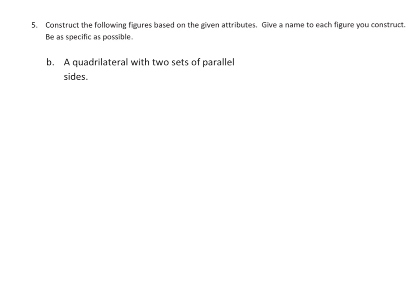Now here, we're given a task. We're told to construct the following figures based on the given attributes and then name it. All right? So it says it's got to be a quadrilateral. So that means it's got to have four sides. And then it says two sets of parallel sides.